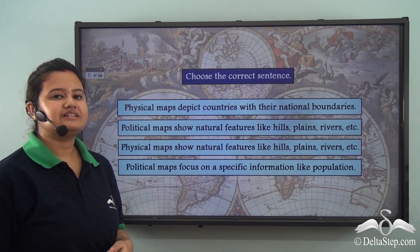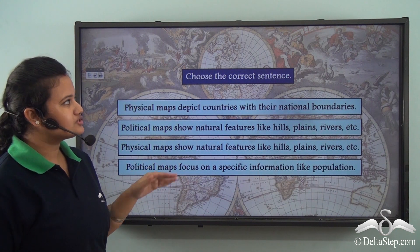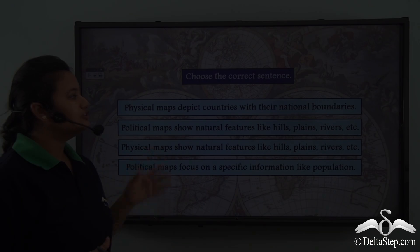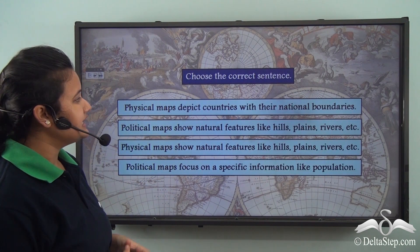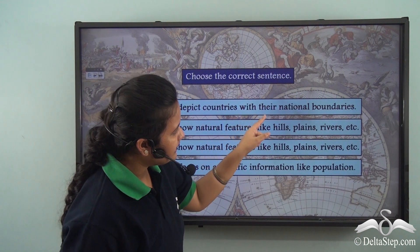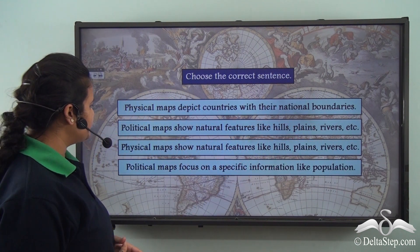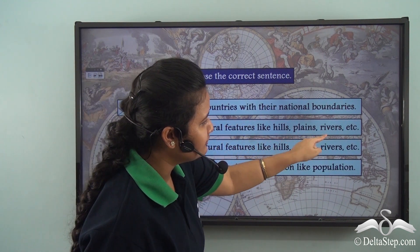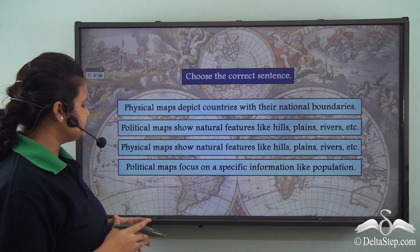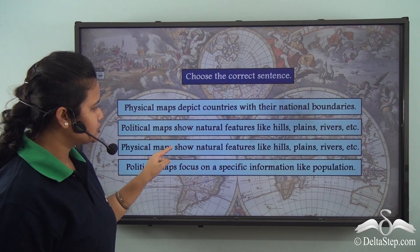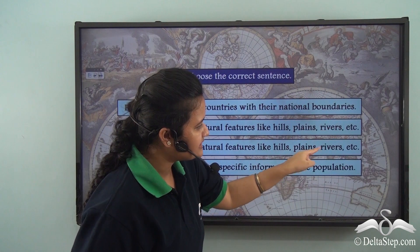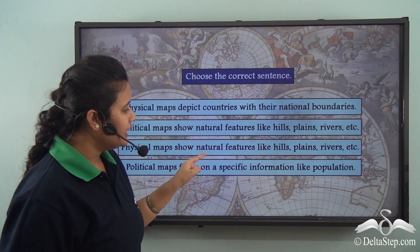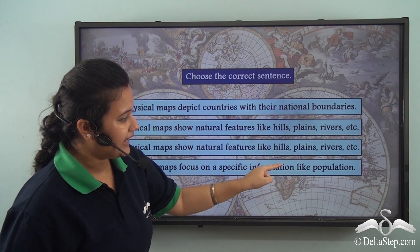Before we proceed, let us solve this. You will have to choose the correct sentence among all these. The first sentence states physical maps depict countries with their national boundaries. The second says political maps show natural features like hills, plains, rivers etc. The third says physical maps show natural features like hills, plains, rivers etc. And the fourth says political maps focus on specific information like population.